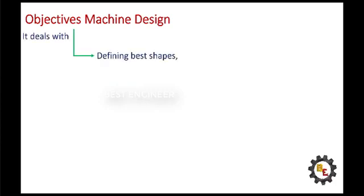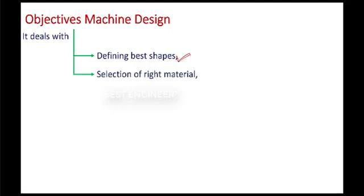What are the objectives of machine design? Defining the best shapes. Here, we are going to design the best shape in engineering design. Selection of right material. Because for a special purpose only, we need to go for complicated material. Or else, we can use right material with low cost. And selection of manufacturing process. Here, we can select what machines we have within the industry. So, we can select the manufacturing process.